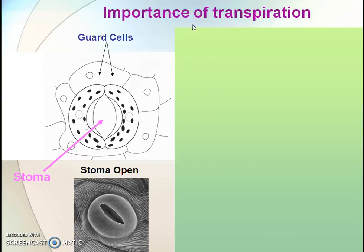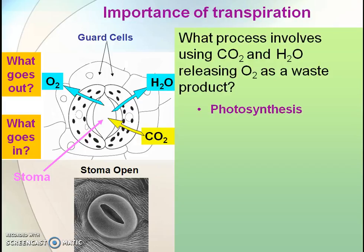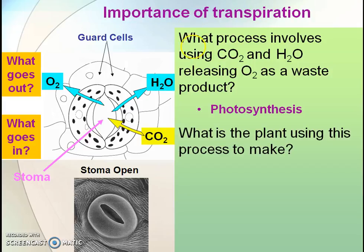Importance of transpiration. Guard cells are kidney-shaped. The inner wall of the guard cells is thicker and the outer wall is thinner. When water fills in the guard cells, pressure increases and the outer wall bulges out, and water is evaporated from the stomata.